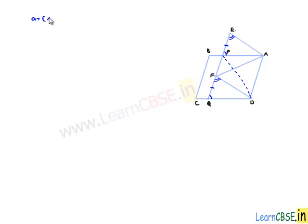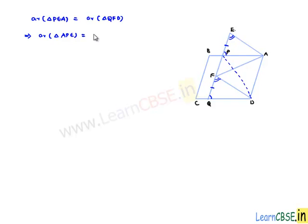Consider the third proof proved above: area of triangle PEA is equal to area of triangle QFD. Let this be equation number 1.